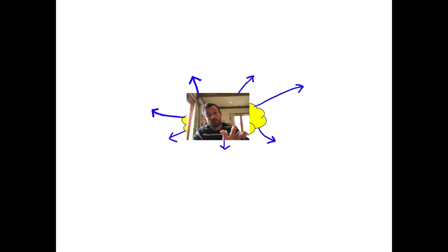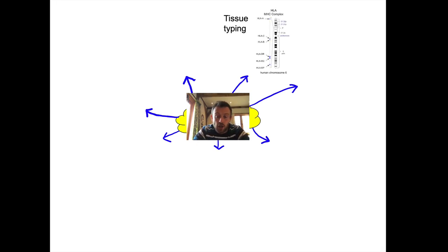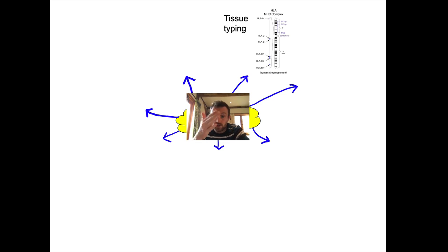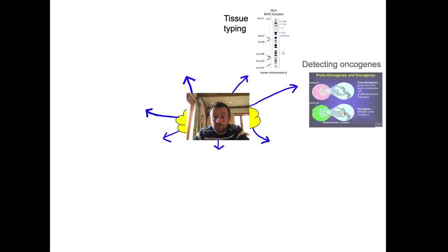There are thousands of applications of PCR technology. The textbook mentions several — do a mind map in your book. First: tissue typing. If someone needs a new kidney or organ, it has to match their tissue type. When screening potential donors, tissue typing involves looking at the genes that determine tissue type, and PCR is involved in that process.